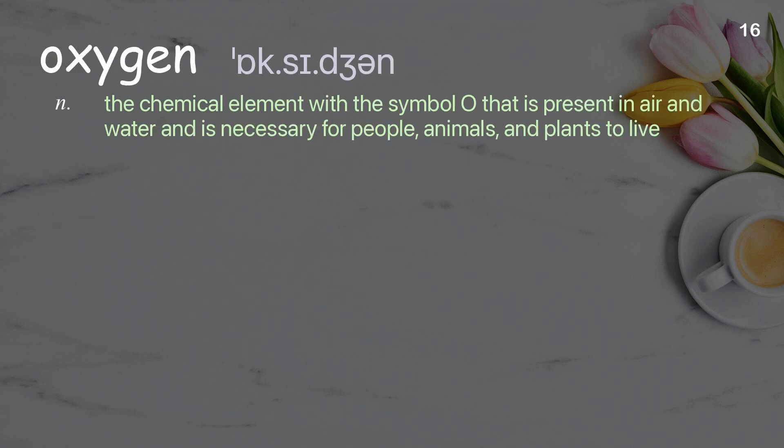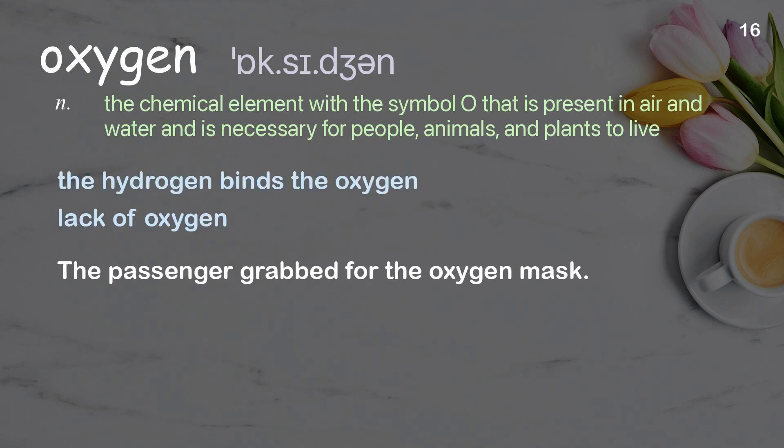Oxygen. The chemical element with the symbol O that is present in air and water and is necessary for people, animals, and plants to live. Examples: The hydrogen binds the oxygen. Lack of oxygen. The passenger grabbed for the oxygen mask.